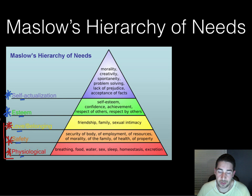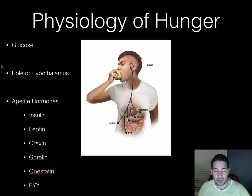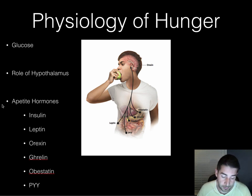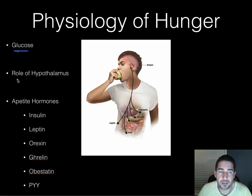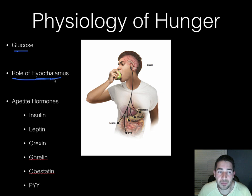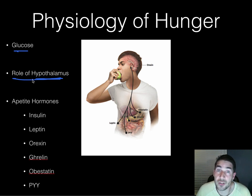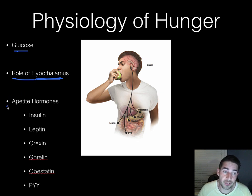Moving on to the physiology of hunger — food is one of our basic needs. Glucose is the sugar in your blood; it's basically your body's energy system — your body breaks down food into glucose and uses it as energy. From the biopsychology chapter, recall that the hypothalamus plays a key role in the four F's: fight, flight, food, and sex — and one of its roles is regulating hunger.